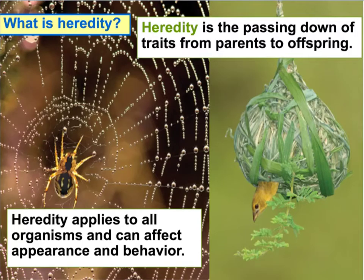What is heredity? Heredity is the passing down of traits from parents to offspring. It's the reason why your parents may have blue eyes and you have blue eyes too, or maybe your parents are tall and you're tall too. That's because you receive those traits from your parents through heredity. Heredity applies to all organisms, even plants — flower color, plant height. Those are all inherited traits.